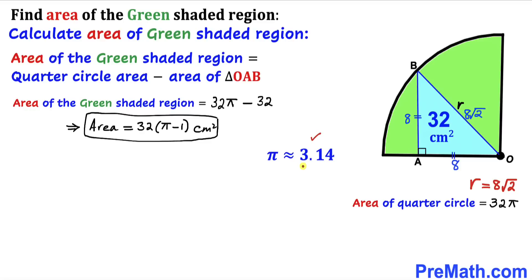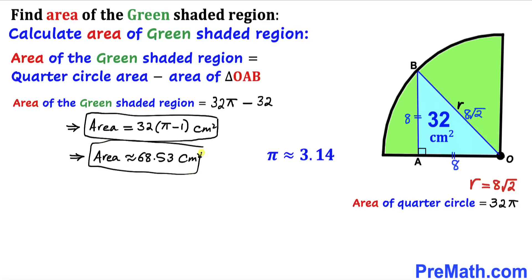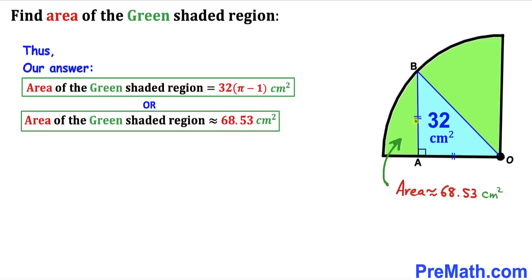We know π ≈ 3.14, so replacing π with 3.14, the area of this green shaded region is approximately equal to 68.53 cm². So the area of this green shaded region turns out to be approximately 68.53 cm², and that's our final answer. Thanks for watching and please don't forget to subscribe to my channel for more exciting videos.